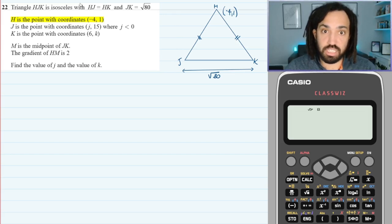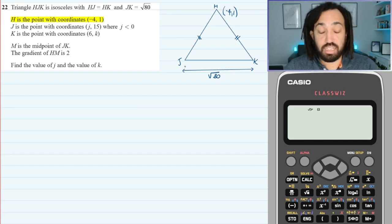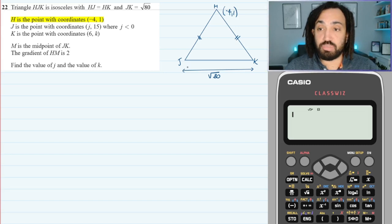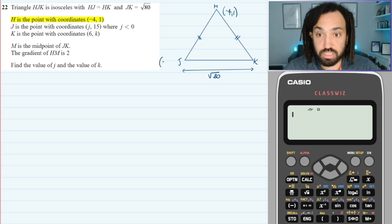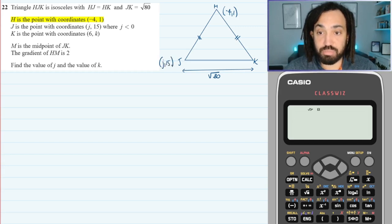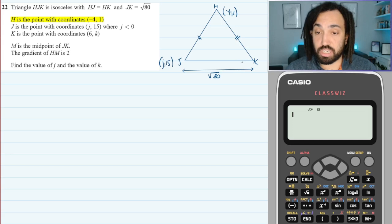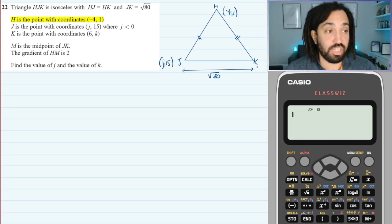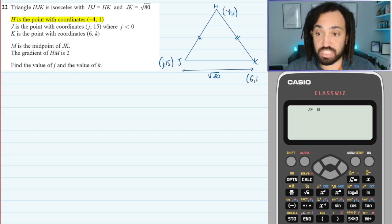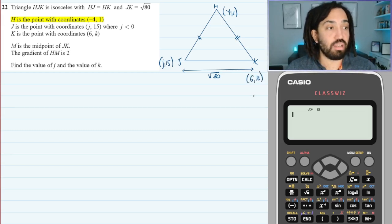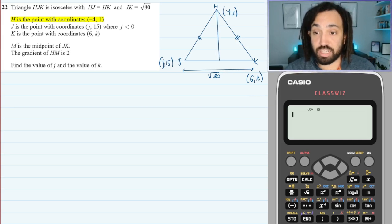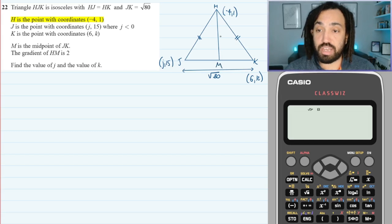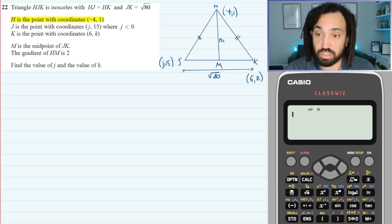Edexcel IGCSE, again like 99% of the time, you must use all the information given to you to solve the question. But for some strange reason, this question you don't actually need that bit of information, and that really threw me when I was doing this earlier. Anyway, that's J 15, and this one over here is 6K. We also know that M is the midpoint, and if I draw a line down to M, then this line is going to have a gradient of 2.